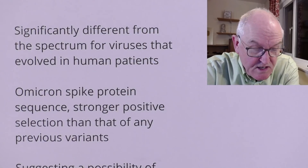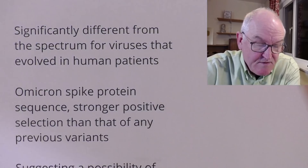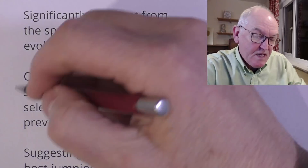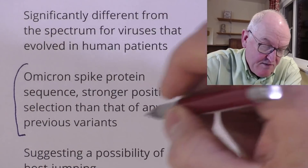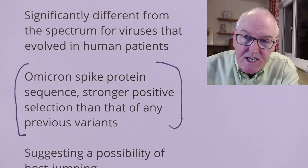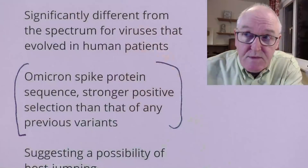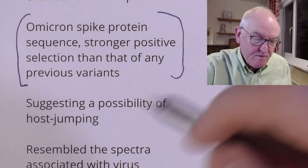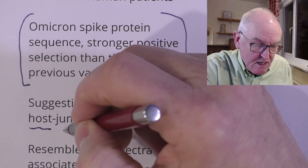The Omicron spike protein sequence shows strongly positive selection — stronger positive selection than any other previous variant. This has gone from nothing to dominant in a very short period of time, giving it a massive evolutionary advantage for spread in humans. And that suggests the possibility of host jumping — that it could have jumped from a host such as a mouse into a human.